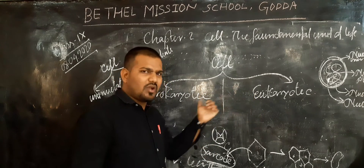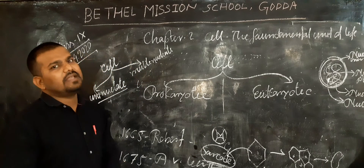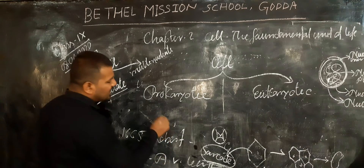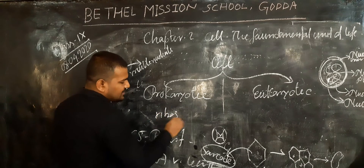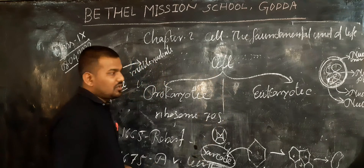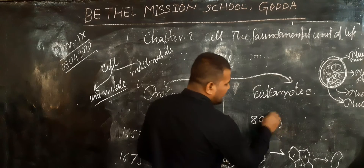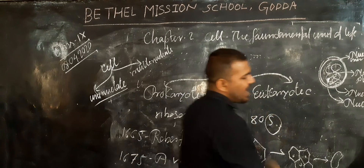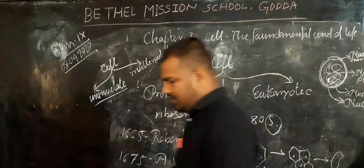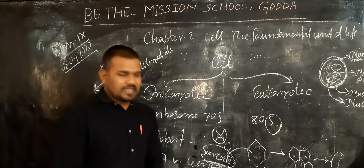Both prokaryotic and eukaryotic cells contain ribosomes, but their sizes are quite different. In the case of a prokaryotic cell, the ribosome is 70S. In the case of a eukaryotic cell, the ribosome is 80S. Here S stands for Svedberg units. Tomorrow we will discuss further about this topic.